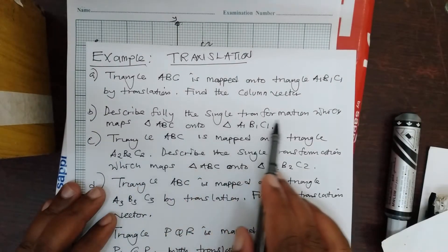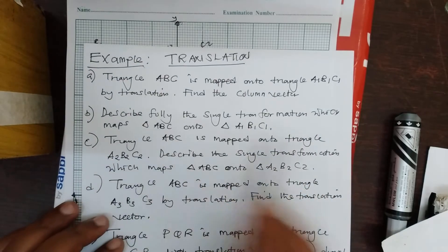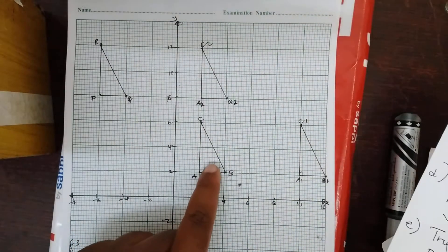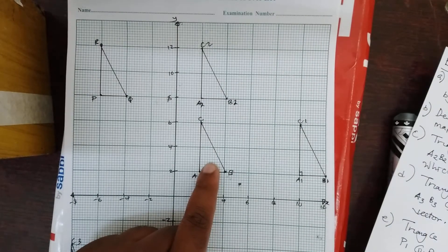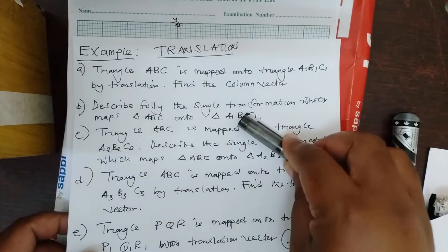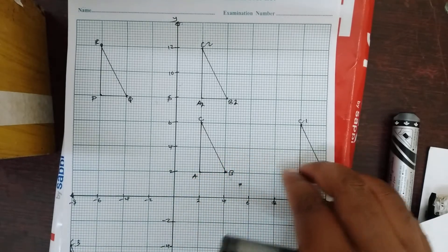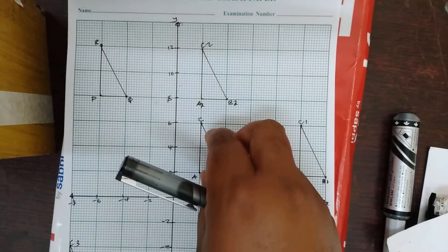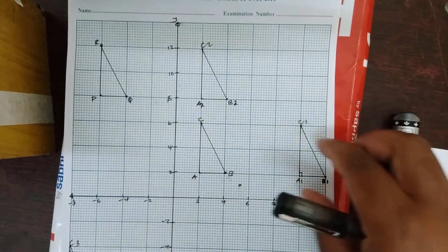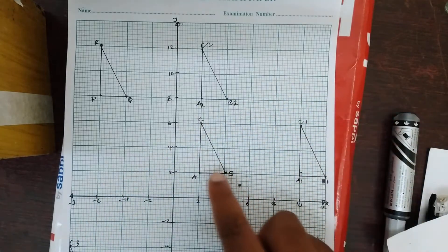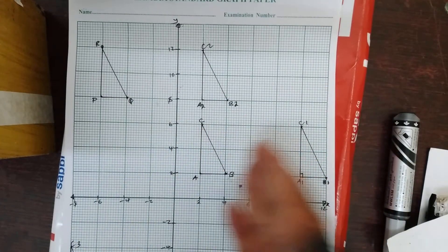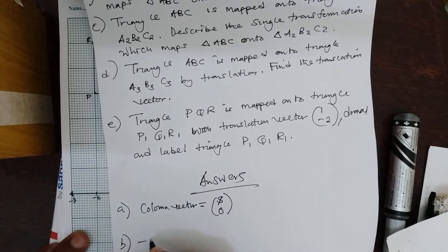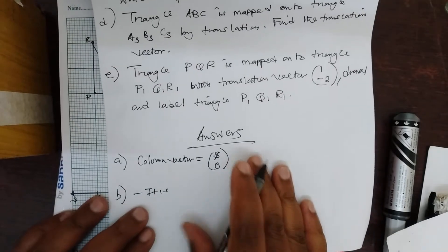Part B says: describe fully the single transformation which maps triangle ABC onto triangle A1, B1, and C1. Even if the first question was not given and this was the only question, you need to acknowledge the kind of transformation that took place. You are able to see that from this point to that point, this is the translation, because the object has moved from here onto a new position and the dimensions are the same. The angles are the same — there is just a change in position. To describe fully, you just acknowledge that it is a translation.